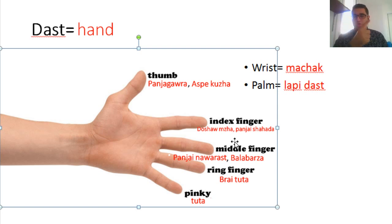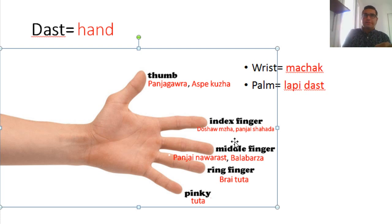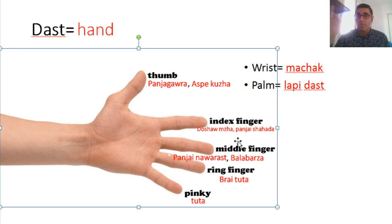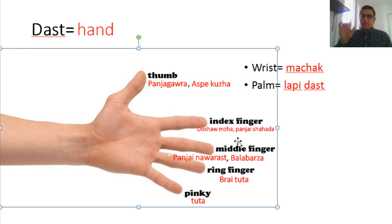Index finger — we call it dosha omja. Dosha means something like a thick paste or liquor — we say dosha yi tamata for tomato paste. So dosha omja is the paste-dipping finger. There's another name: panzih shahada — the finger of shahada — from Islamic prayer, where at certain points you point the finger upward while declaring that God is only one. But dosha omja is my favorite — it's more Kurdish and funnier.